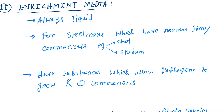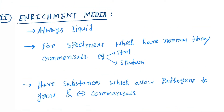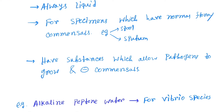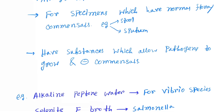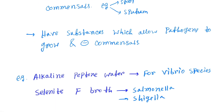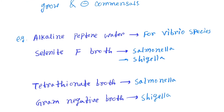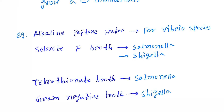Enrichment media is always liquid, used for specimens which have normal flora or commensals, such as stool and sputum. It contains substances which allow pathogens to grow while inhibiting commensal organisms. Examples include alkaline peptone water for Vibrio species, and selenite broth for Salmonella and Shigella.